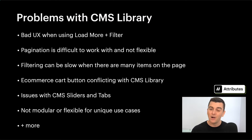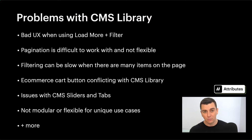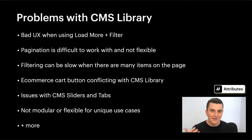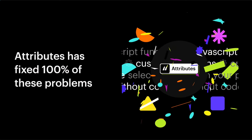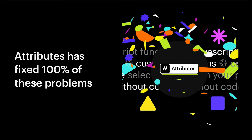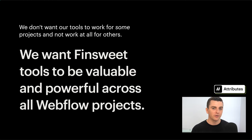These are the reasons why CMS library may not work for one of your projects. First, pretty bad UX when you're using load more and filter when your CMS list is long. Filtering can also be very slow if there's a lot of items on the page. E-commerce cart button can conflict with CMS library. Sliders and tabs — not much flexibility, some issues there. And it's not fully modular or truly flexible for unique use cases. Attributes has fixed 100% of these problems — every problem I just mentioned is now working by default in Attributes. Our rebuild took all of these problems into consideration. We want FinSuite tools to be valuable and usable across all Webflow projects.